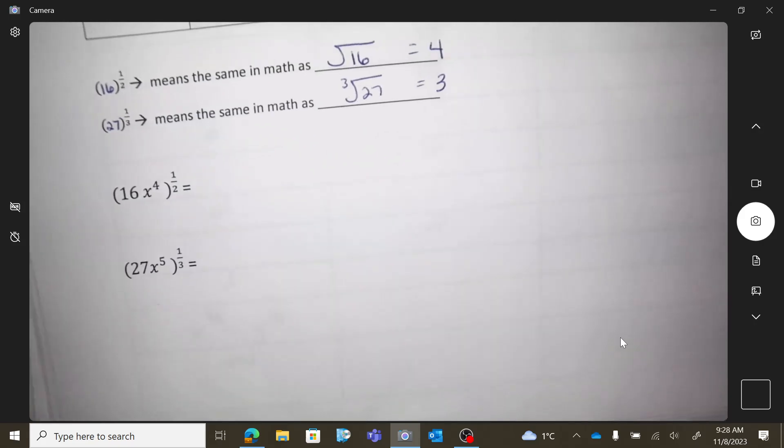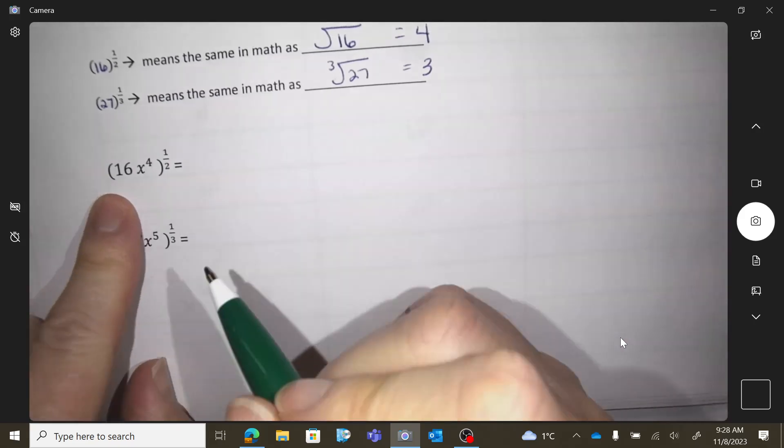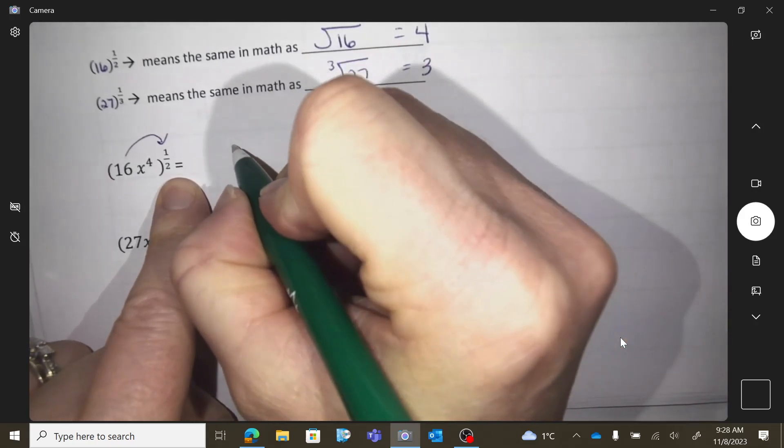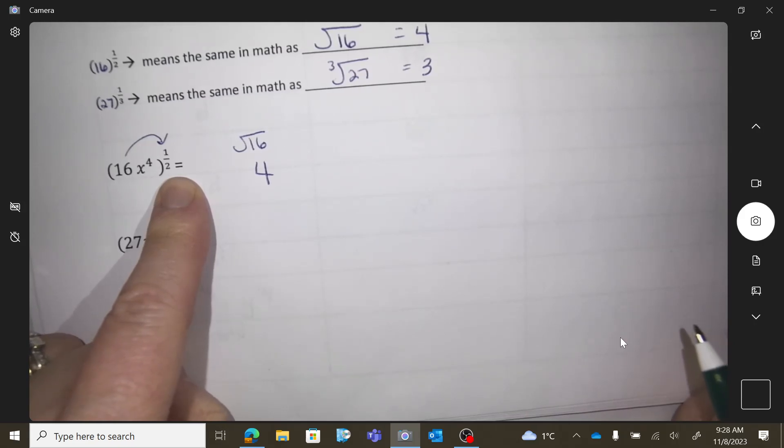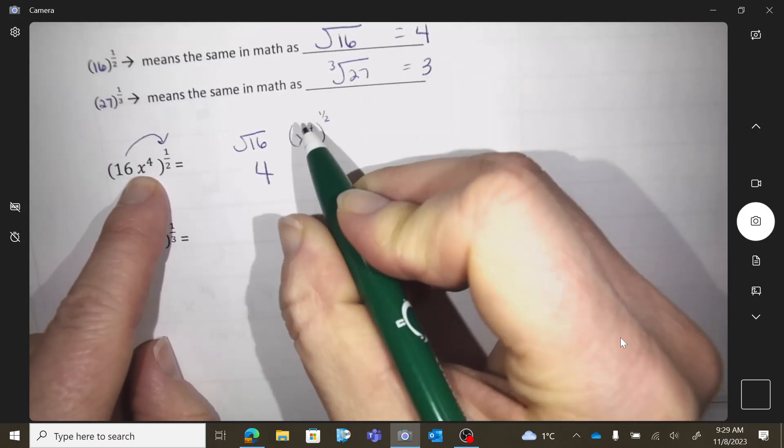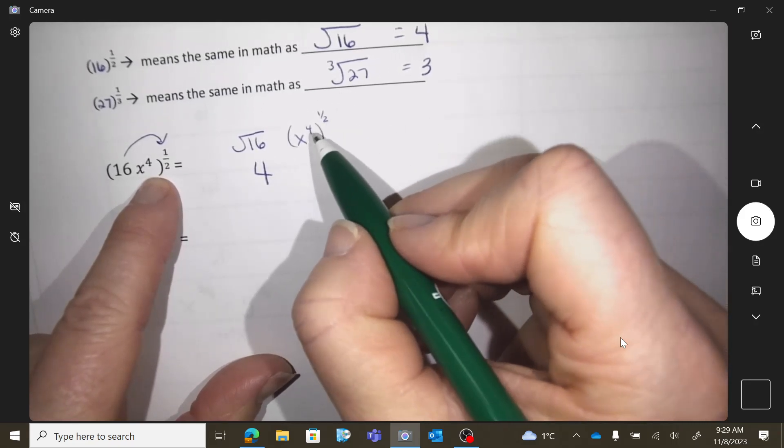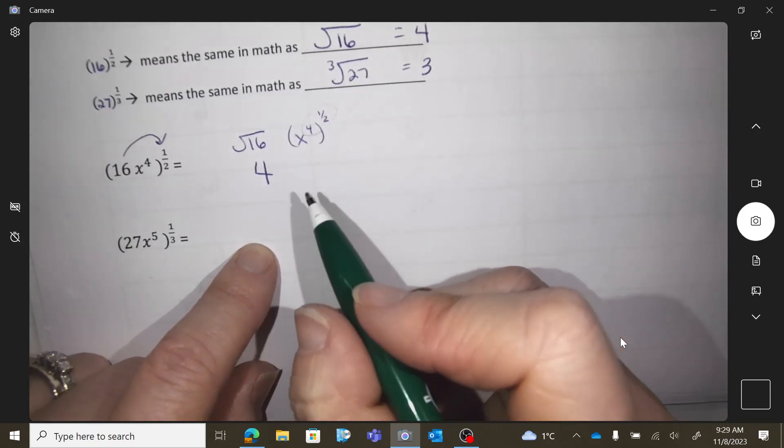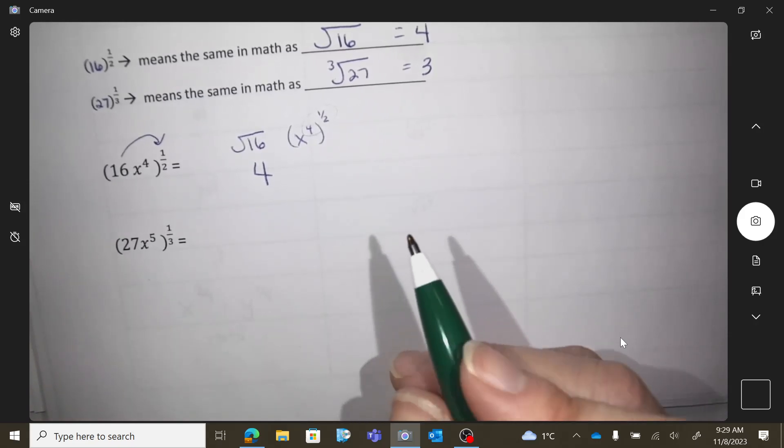Okay, so if I ever had this. Okay, so I'd have to do the math. What's 16 to a 1 half? Square root of 16, so that's 4. And then on this part what do you do with the exponents? What's the rule? You would multiply. So if I multiply that, what's 4 times a half? What's a half of 4? 2.